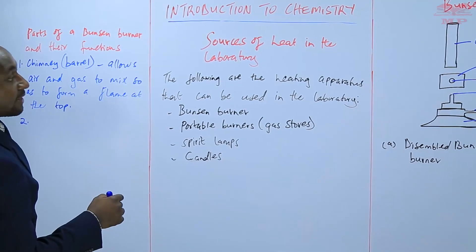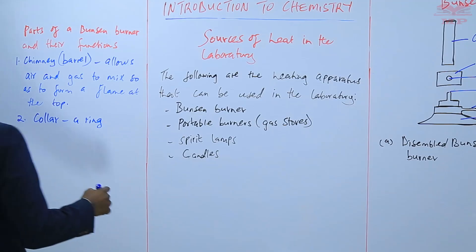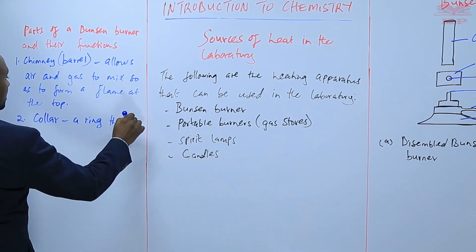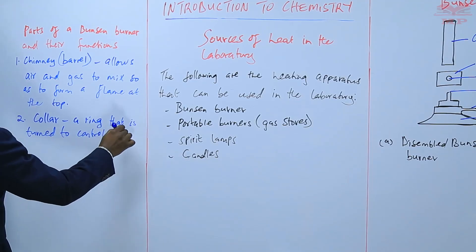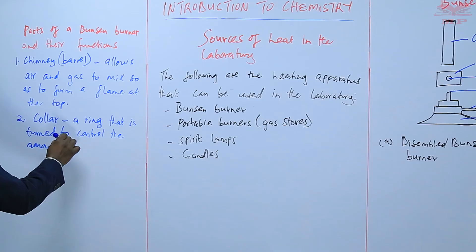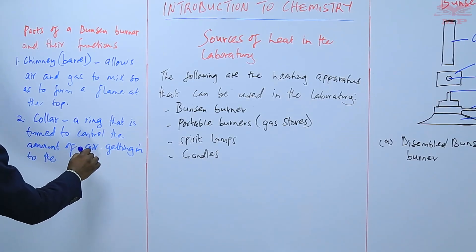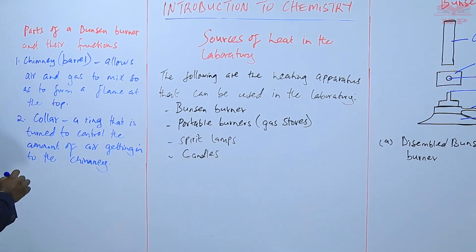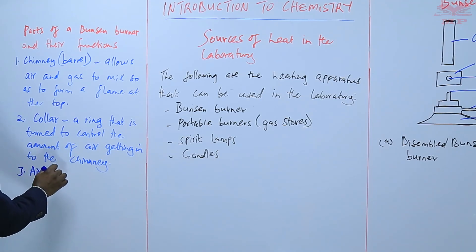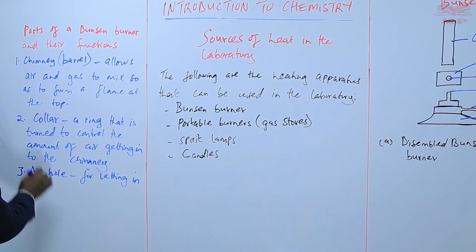We have the collar — this is a ring that is turned to control the amount of air getting into the chimney. It can be turned either to open or to close the air hole. The air hole is for letting air into the Bunsen burner.